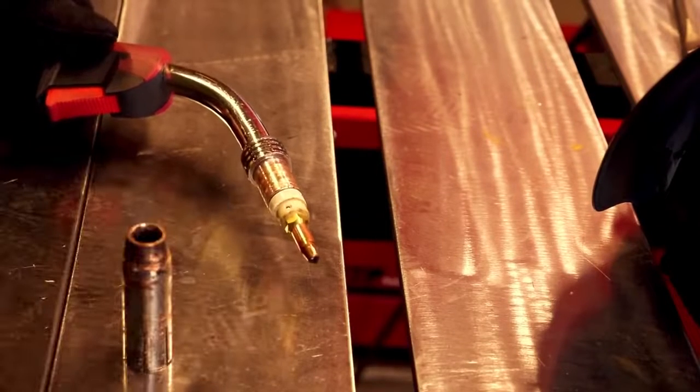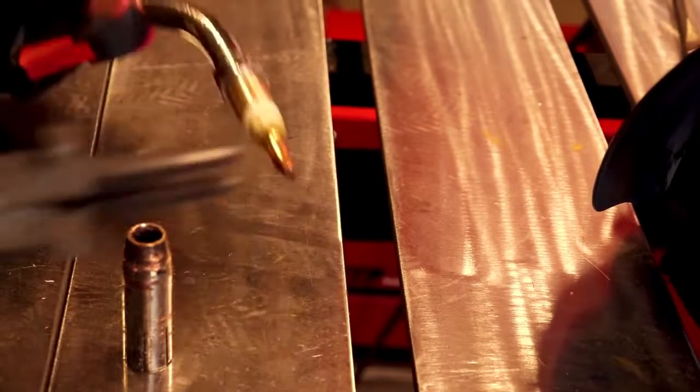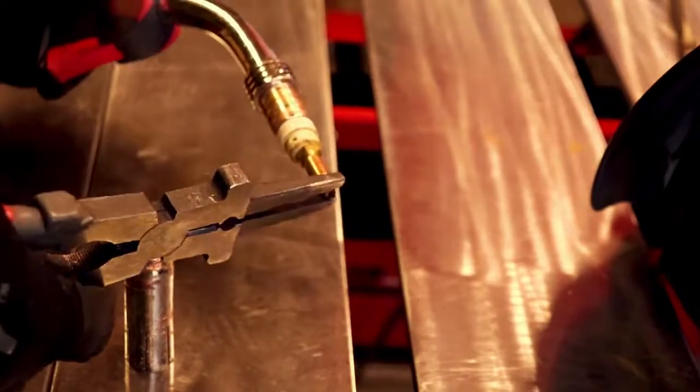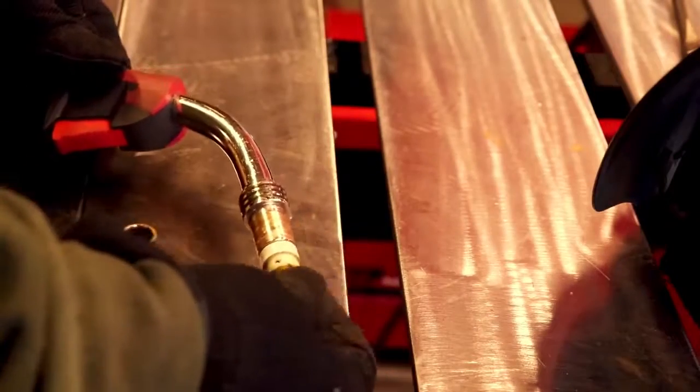When you're welding in pulse mode, any little hiccup in your wire feeding system will be magnified at the tip. So we're going to start with a fresh tip, clean out the roller, and adjust our wire tension.